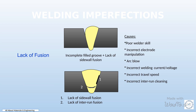In the world of welding, there are several factors that can contribute to poor weld quality. One of the main causes is poor welder skill, which can result in inconsistent and weak welds. Another common cause is incorrect electrode manipulation, where the welder fails to handle the electrode properly, leading to improper penetration and weak joints. Arc blow, caused by magnetic fields, can also affect the weld quality by causing the arc to deviate from its intended path. Additionally, incorrect welding current or voltage settings can result in insufficient or excessive heat, leading to weak or distorted welds.